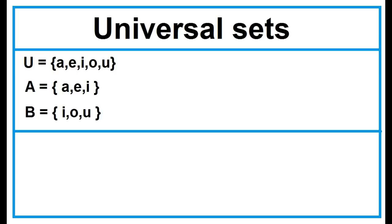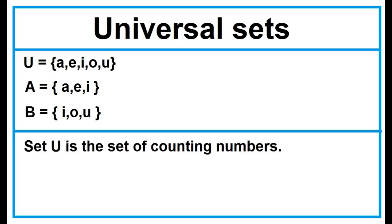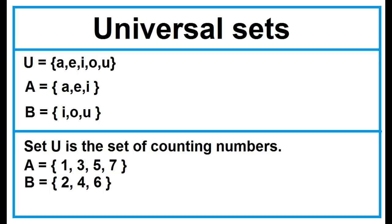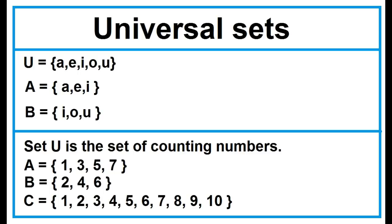Another example: Set U is the set of counting numbers. Sets A, B, and C are proper subsets of Set U, because a universal set contains all the elements in a particular problem.